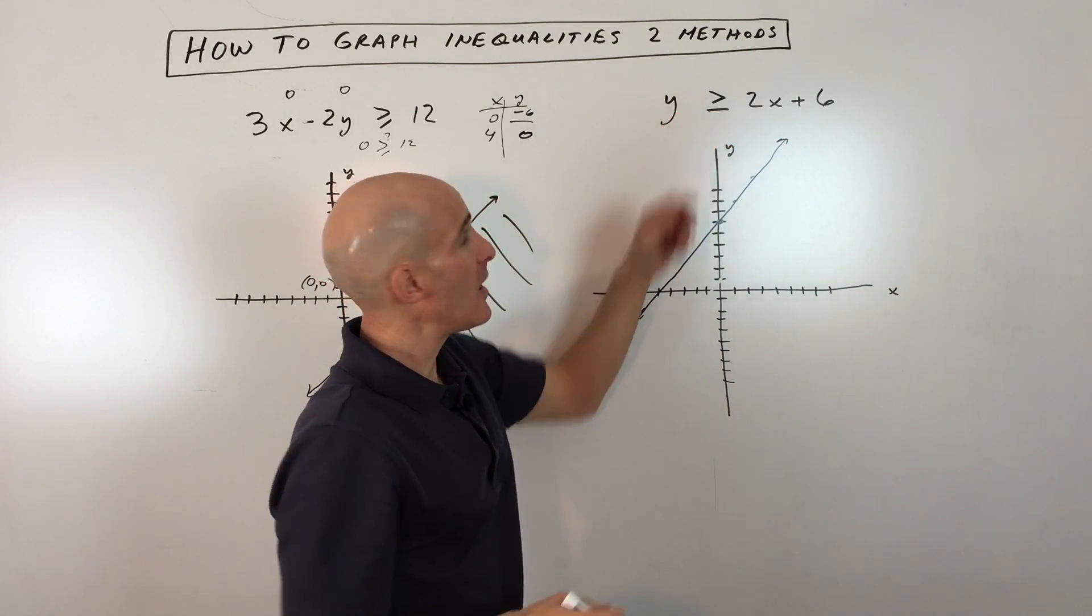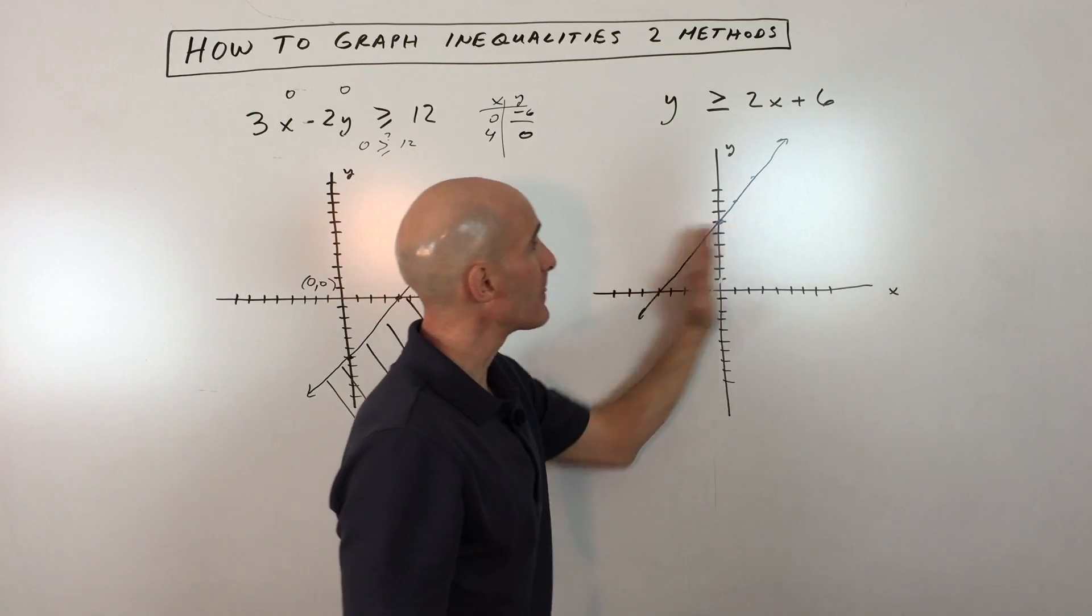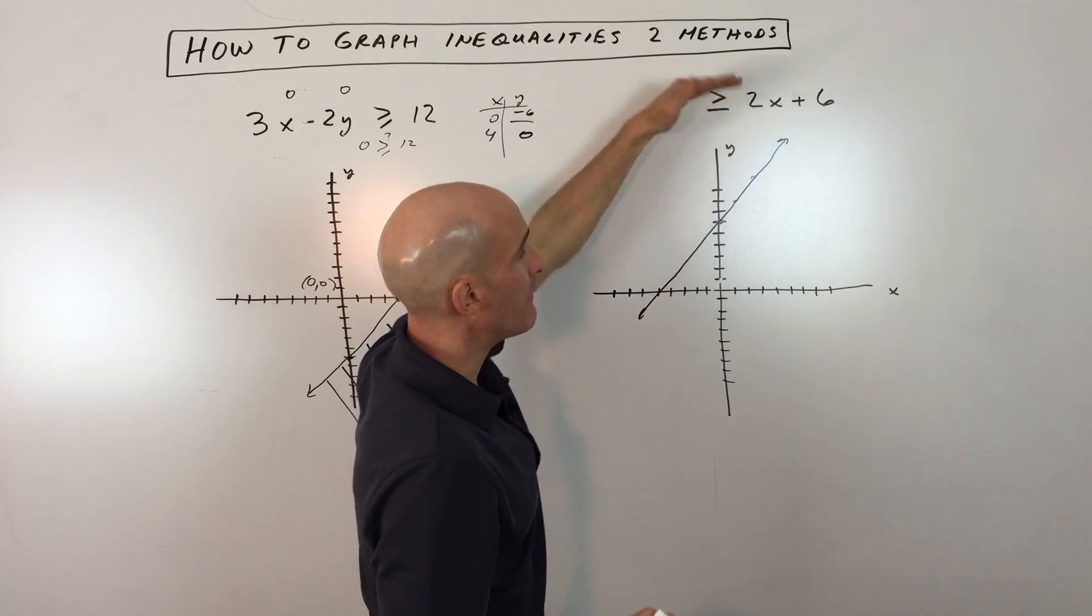And because the y is by itself, the y controls the vertical direction, up and down, right? X controls left and right. So if the y's are greater than this quantity, that means that we're shading greater than we're shading above.